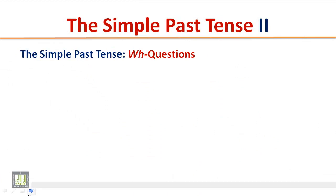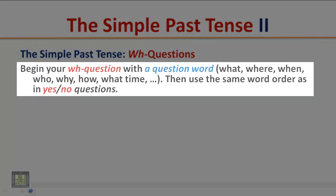The Simple Past Tense Wh-Questions: Begin your Wh-Question with a question word such as what, where, when, who, why, how, what time, etc. Then use the same word order as in Yes-No Questions.